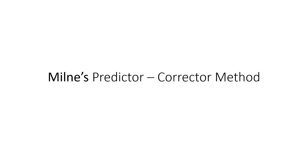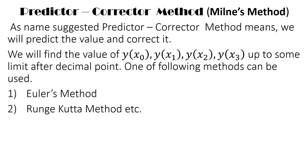The Milne's Predictor and Corrector method works by first predicting the value and then correcting it. The method is also known by other names, but the principle is clear: values will be predicted and then corrected. We can find the values of y(x0), y(x1), y(x2), y(x3) up to some limit, and different methods are available for this.